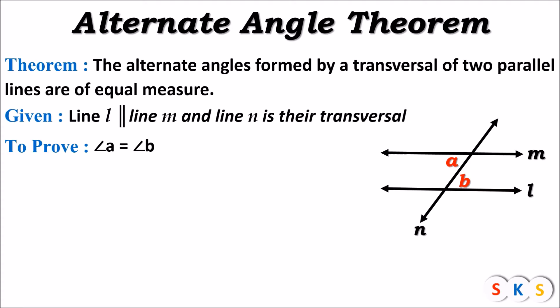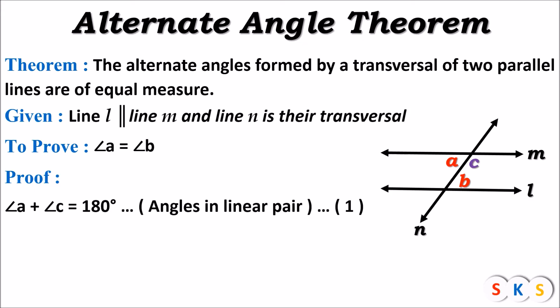I have to prove these two angles have the same measure. So, to prove: angle A equals angle B. We will take one more angle — angle C, adjacent to angle A. Now for the proof: angle A plus angle C equals 180 degrees, because they form a linear pair. Look at this figure — angle A and angle C form a linear pair, therefore the sum of these two angles is 180 degrees. That is equation number one.